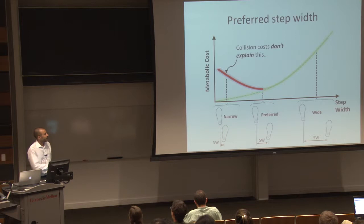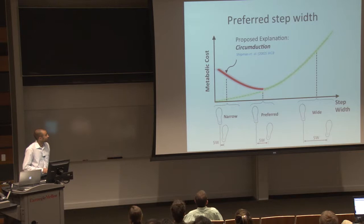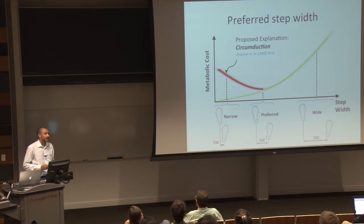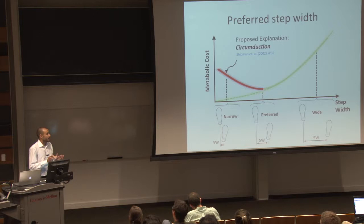It's been proposed that circumduction could be responsible for this increase in metabolic cost at narrower walking gaits. The idea is that as your gait narrows, your stance leg ends up becoming an obstacle, so you have to swing your leg out and around that stance leg in order to maintain that narrow width. That circumduction is what's going to be increasing metabolic cost. In this work, we want to explore this further.